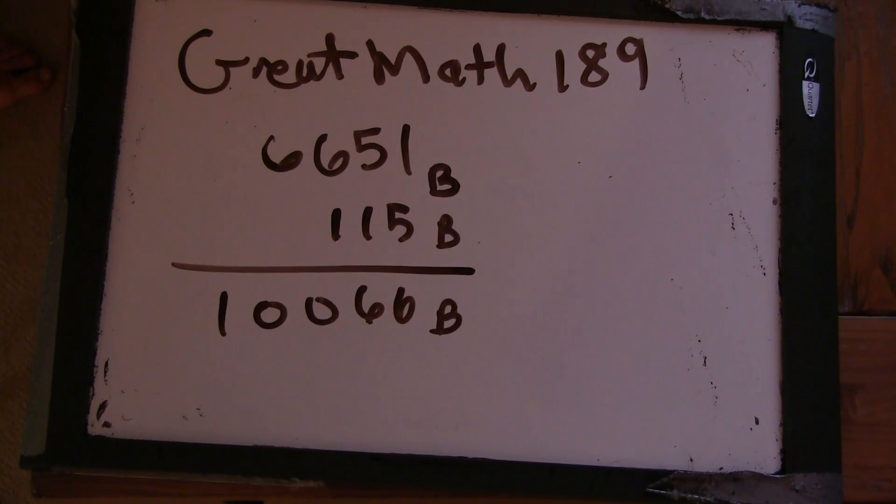So this is a challenge problem you picked out of your book about bases. And it says here you have to find the base. So we have 6651 plus 115, and those are both in base B, but we don't know what the base is. Equals 10066 base B.